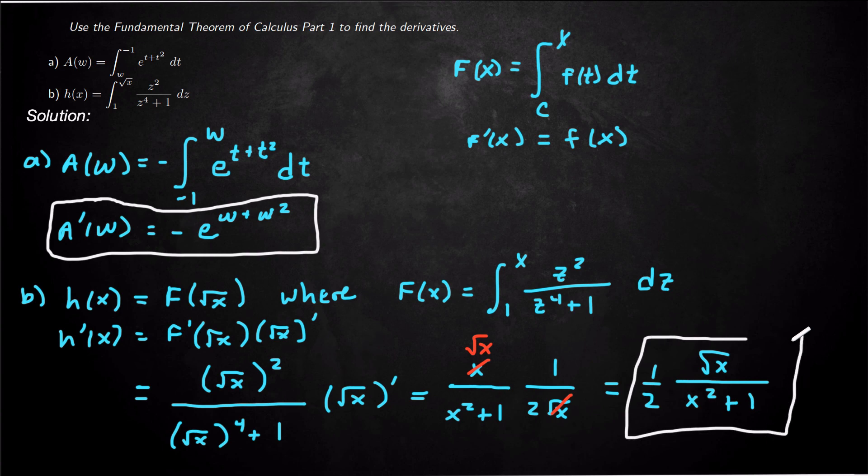So the only thing that was different there is you had to have the chain rule because it was a composition. The bound was a function of x, so you just have to multiply by the derivative of that function. And you could imagine if it were the lower bound you would have to put a negative out front and then do this process. So that's kind of the general idea.